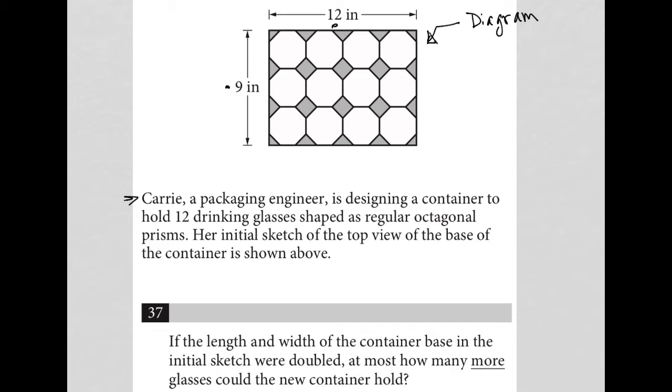Carrie, a packaging engineer, is designing a container to hold 12 drinking glasses shaped as regular octagonal prisms. Her initial sketch of the top view of the base of the container is shown above. So this is really a three-dimensional thing. These are octagonal prisms. So we can put a glass inside of each of these spaces.